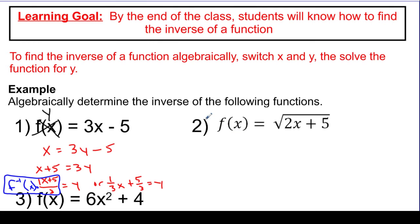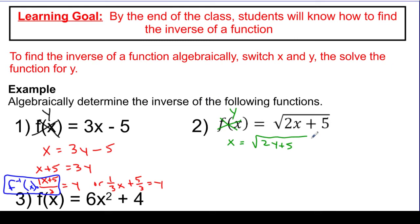So let's take a look at a couple of other examples. This second one — I'm going to cross off the function notation and say this is the same as y equals. So I'm going to do the switch: now it says x equals the square root of 2y plus 5. If I wanted to get y by itself here, the first thing I need to do is to square both sides, and that removes the radical.